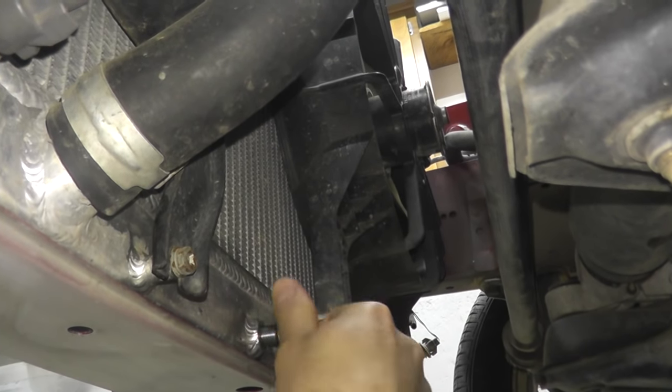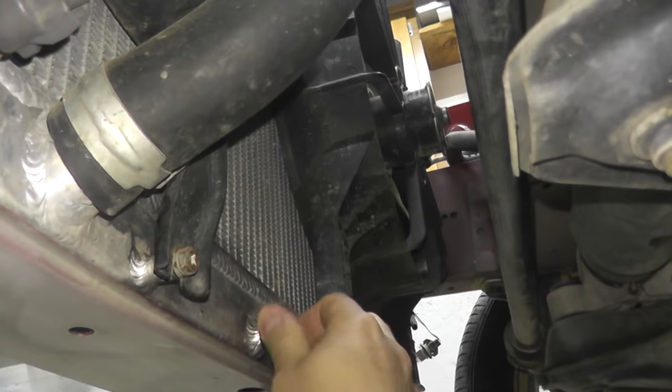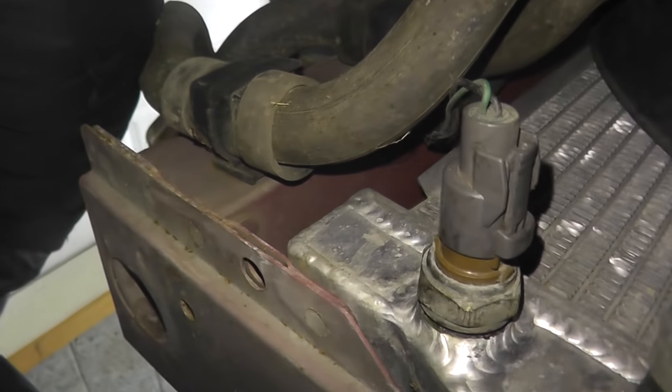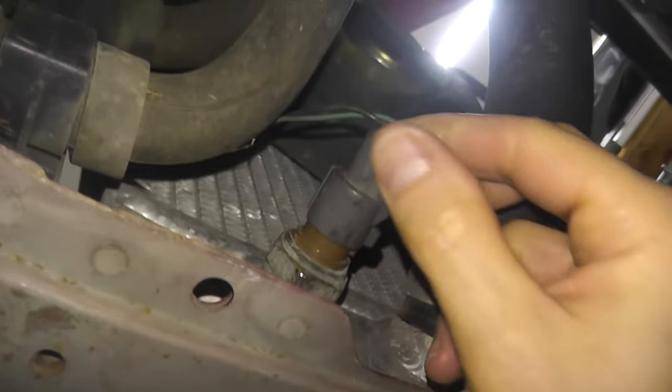And then once all the fluid is removed from the radiator, right here you have a harness connector and there's a tab. You're going to press in the tab and pull from the body. Don't pull from the wire.